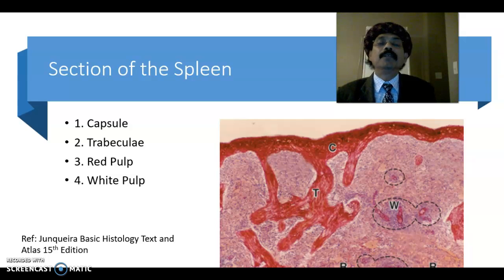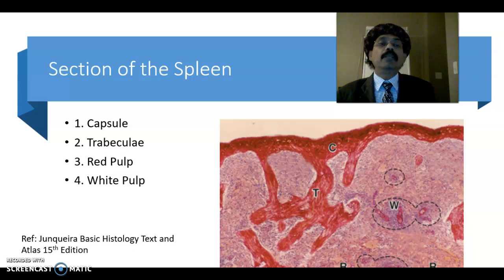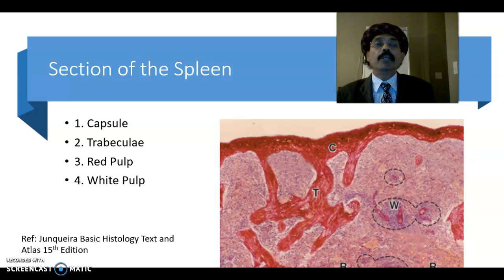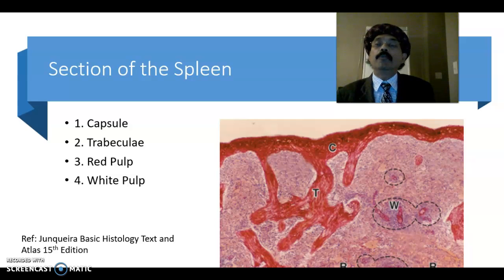Hello, today I will discuss about the histology of the spleen. The spleen is the largest lymphoid organ of our body. It is located in the abdomen, in the left upper quadrant of the abdomen.